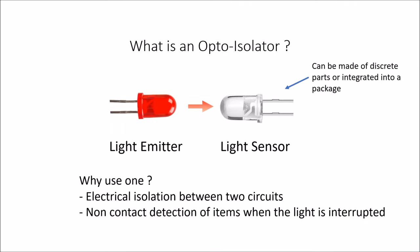So what is an optoisolator or optocoupler? Well, in its most basic form, it's two elements that consists of a light emitter and a light sensor. Why do we want to use one of these? In a lot of cases, we want to isolate two different circuits. For example, we want to isolate an AC circuit from a DC circuit, or we want to isolate two circuits that may have interactions if they're connected directly. Another reason is that we can do detection of items if we have a discrete optoisolator when the light is interrupted, and that's particularly advantageous in model railroading.